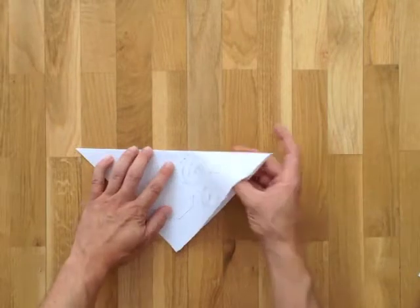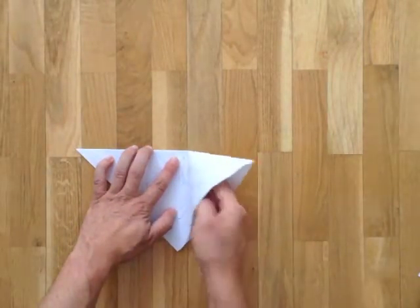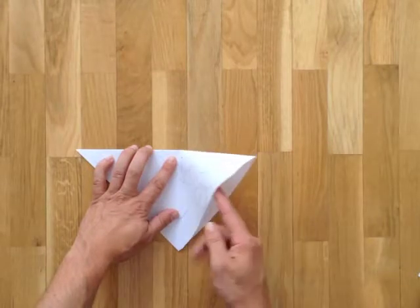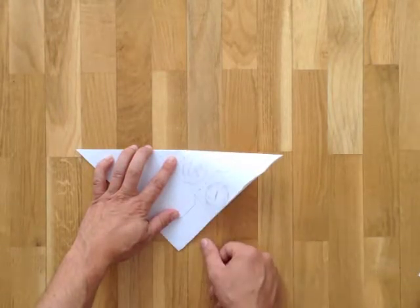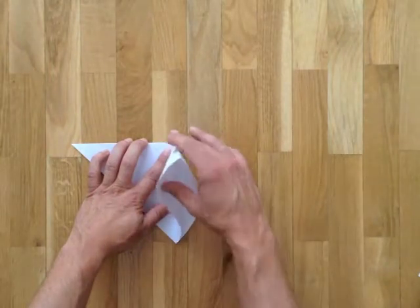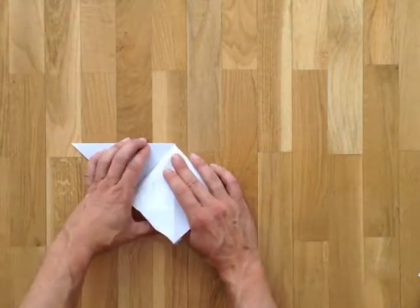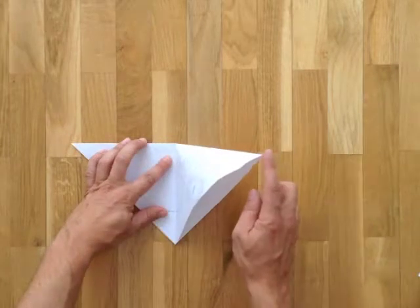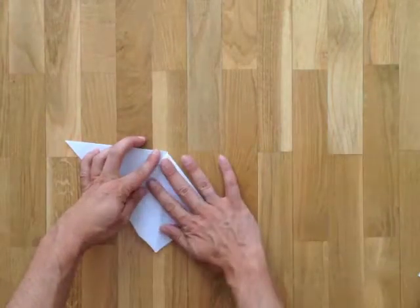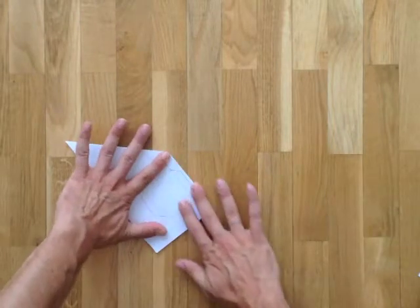Now, starting from here, we're going to put in our hands this flap right here. We're going to lift it up and we're going to fold it down so that this corner of the triangle gets folded to the tip, like so.